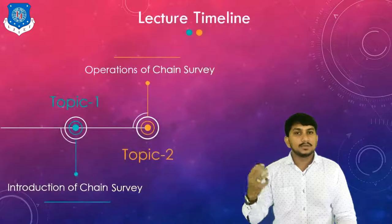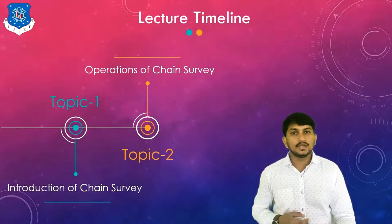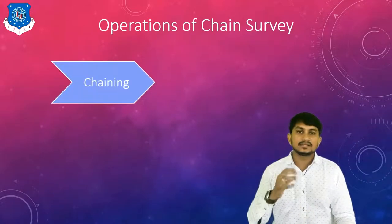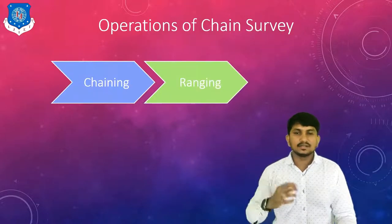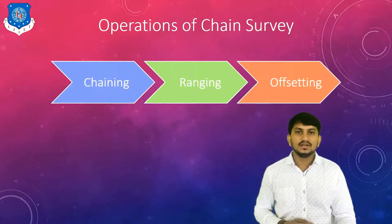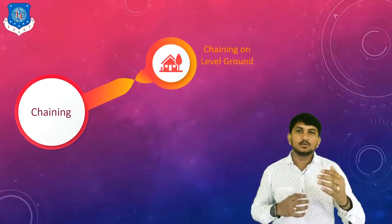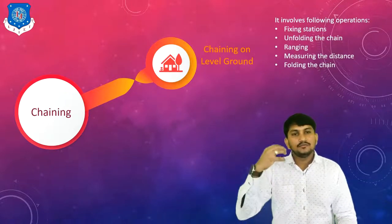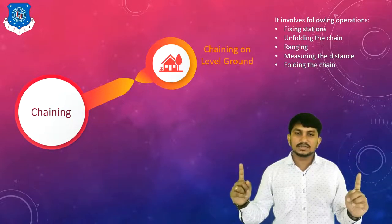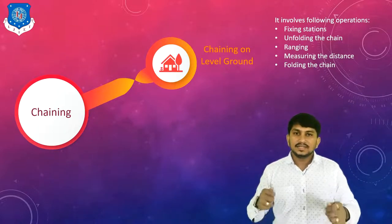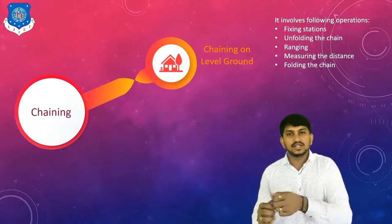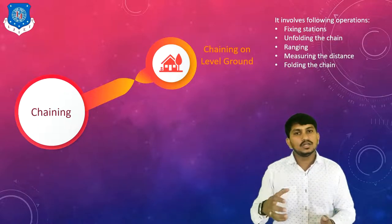That's all about the introduction of chain survey. Now we move to the second topic — operations of chain survey. There are mainly three operations: first is chaining, second is ranging, and third is offsetting. Chaining is the process of finding out distances between two points. Chaining on level ground involves fixing station points, unfolding the chain, ranging the chain, measuring the distance, and folding the chain back.